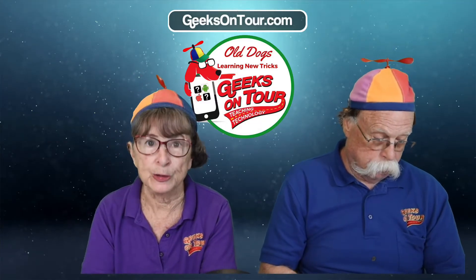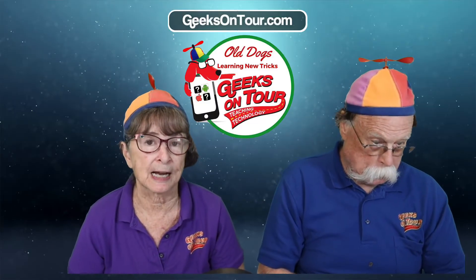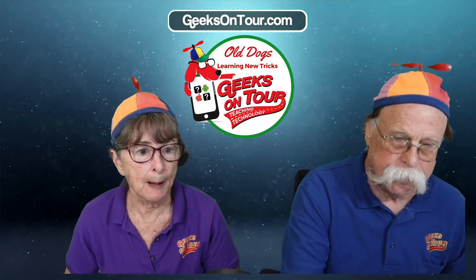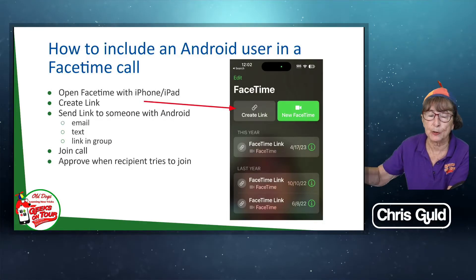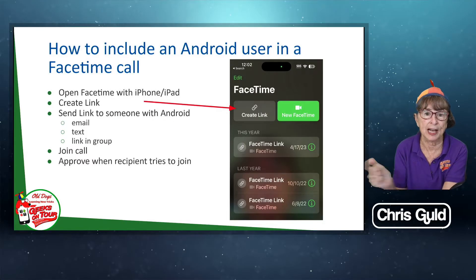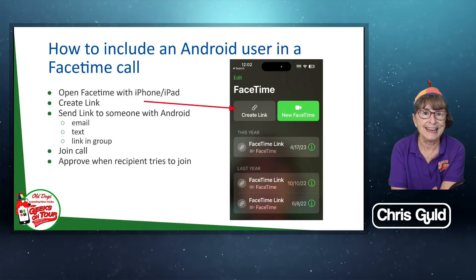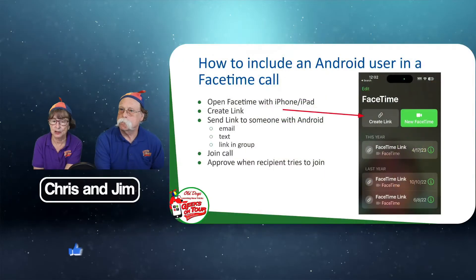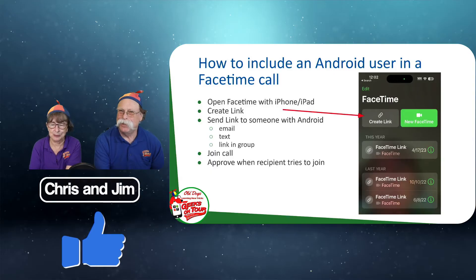It used to be you had to have an Apple phone, period, and you could not participate in a FaceTime call. Now, you do have to have an iPhone to start it, but you can include Androids. By creating a link and sending it to someone with an Android phone via email, text, or even posting it in a group, they can click the link and join. Every time somebody tries to join, you do have to approve it, so people can't FaceTime bomb you.